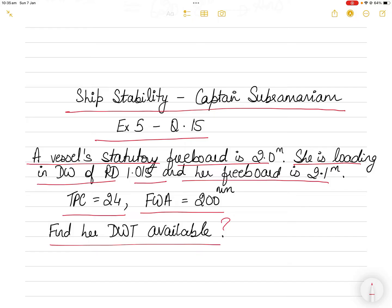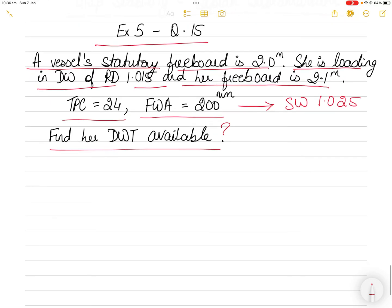The deadweight available is to be found for relative density 1.015. These little things are not mentioned to you, so you have to understand how to find that. The TPC and freshwater allowance given to you are for seawater density 1.025.